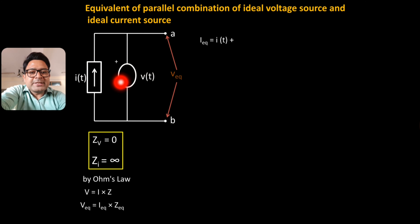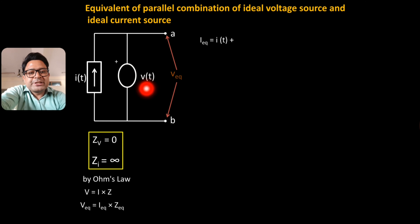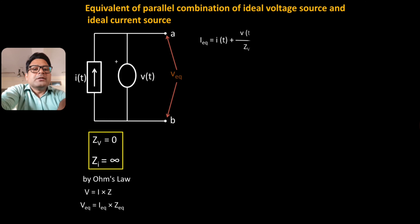But what will be the current through the ideal voltage source? We do not know that, so we will use the formula. According to Ohm's law, I = V / Z. The voltage of this voltage source is V(T) and its internal impedance is ZV, so the current through it will be V(T) / ZV. Therefore, the equivalent current IEQ is I(T) + V(T) / ZV.